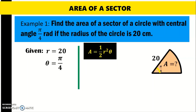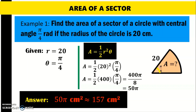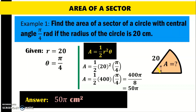Going back to the formula A equals one-half r squared theta, we just need to substitute the values. We know the value of r, that is 20. So replace r with 20 and theta with pi over 4. Squaring 20 gives us 400, and then simplifying, we have 400 pi over 8. And 400 over 8 can be simplified to 50 pi. Therefore, the area of the sector is 50 pi square centimeters.